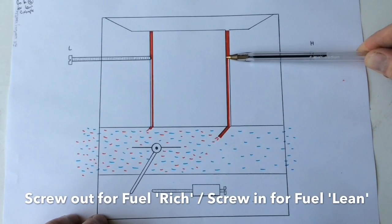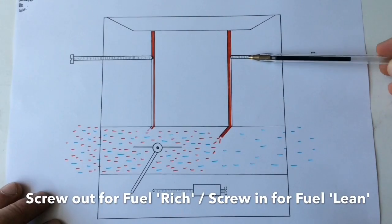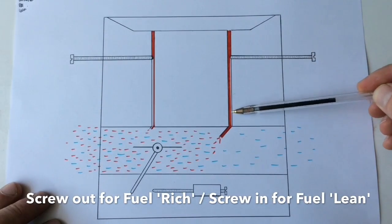So leaner will be going in and richer will be coming out, allowing more or less of this fuel. If I was to pull it out that little bit more, you can see there even more fuel is coming out now.